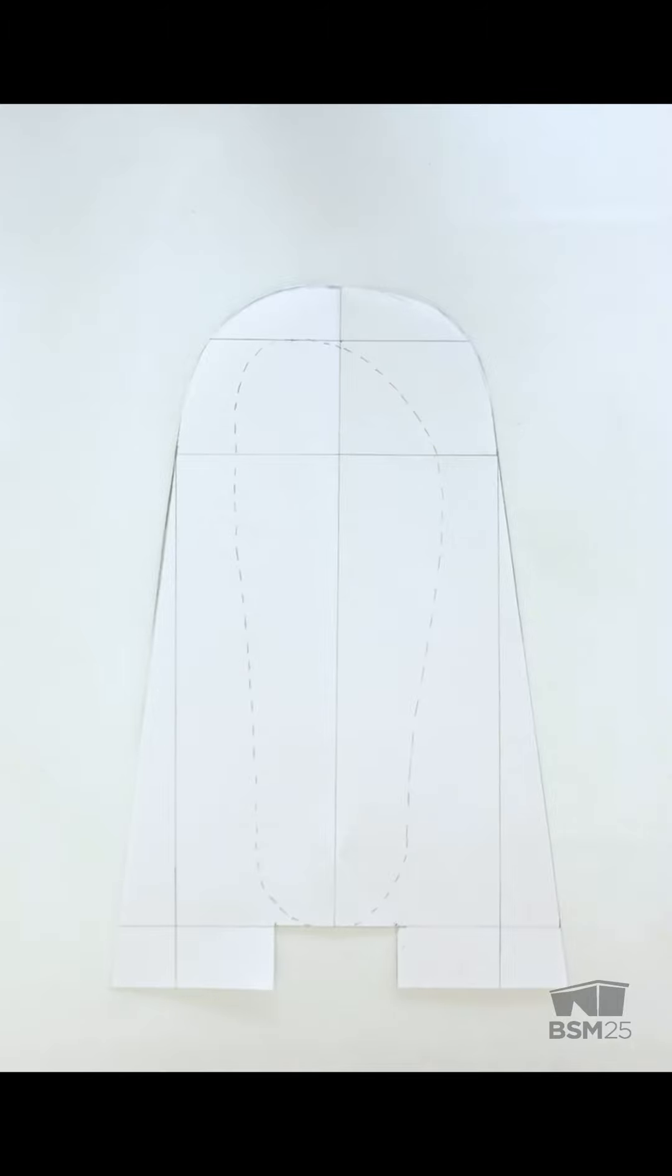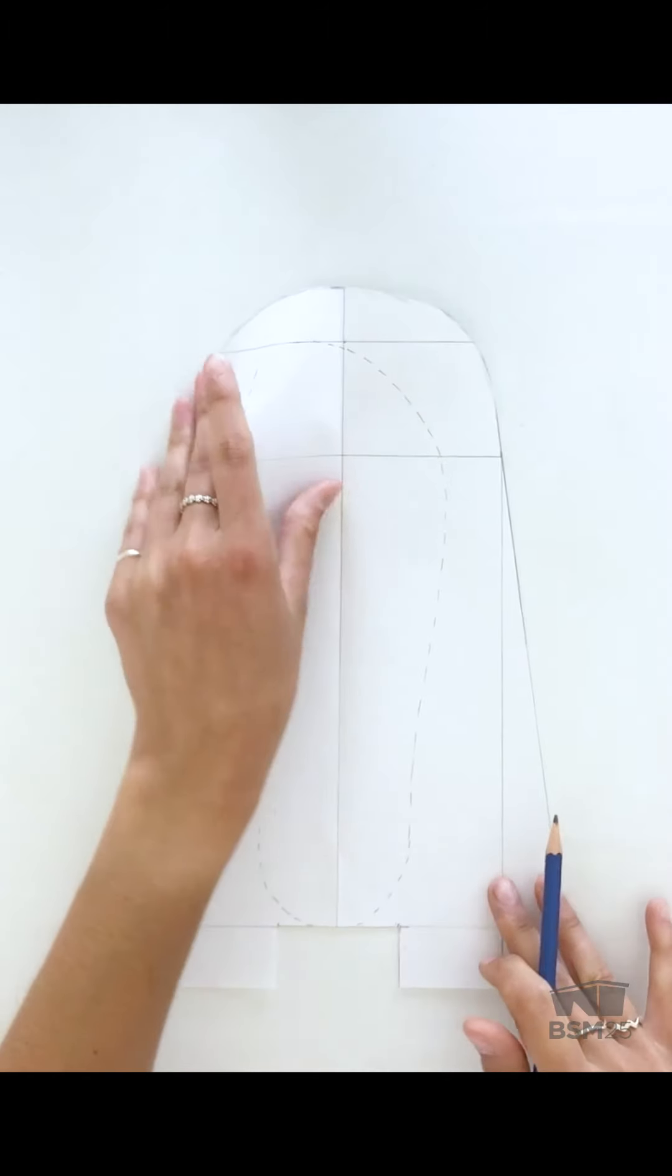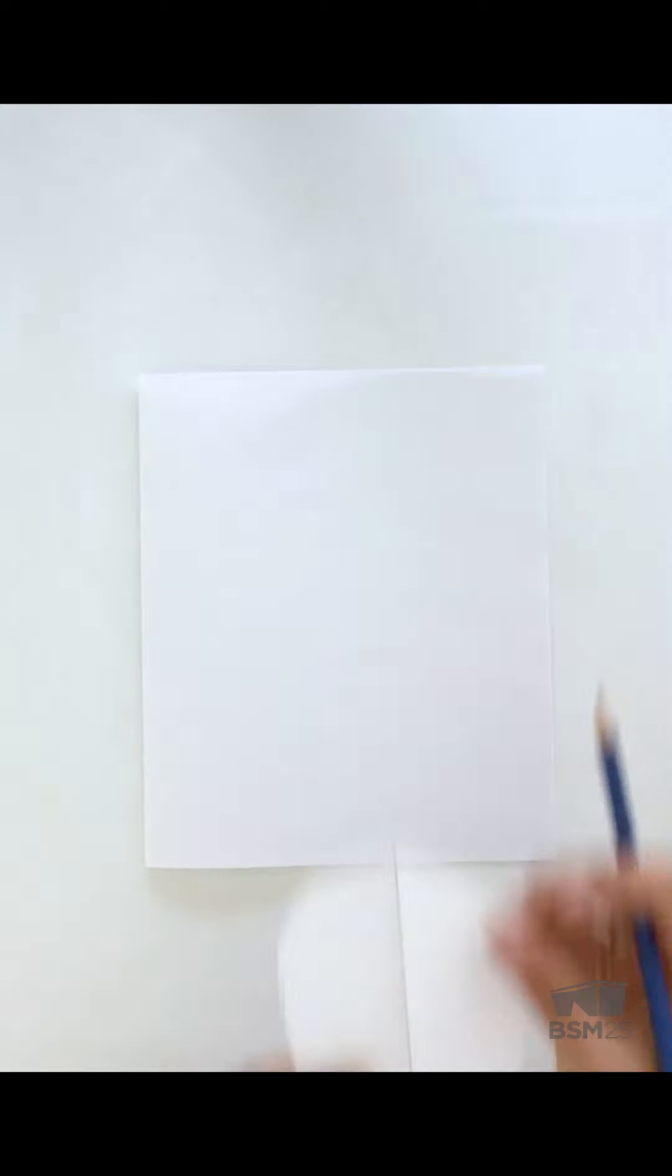Once our pattern piece is all cut out, we're going to move it off to the side for just a moment. We need to make the pattern for the vamp. For the vamp, we'll need another piece of folded paper as well as our foot tracing.